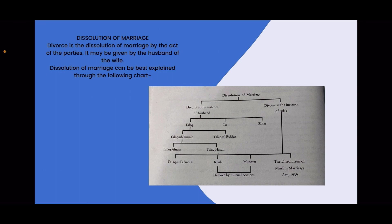In Muslim law, the prime authority for divorce is given to the husband. From the husband's side: Talak, Ila, and Zihar are modes of dissolution. Talak has two types: Talak-ul-Sunnat (which includes Talak-Ahasan and Talak-Hasan) and Talak-ul-Biddat. From the wife's side: Tafweez, Khula, Mubarat, and the Dissolution of Muslim Marriages Act 1939 are available. Divorce by mutual consent is where husband and wife mutually agree to dissolution.